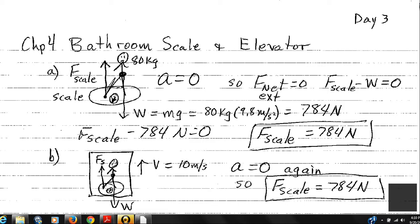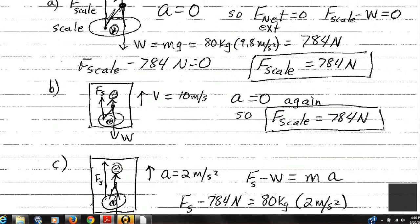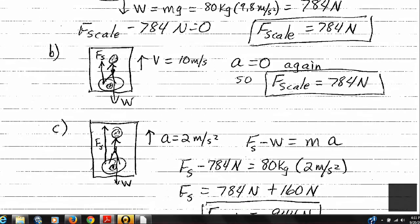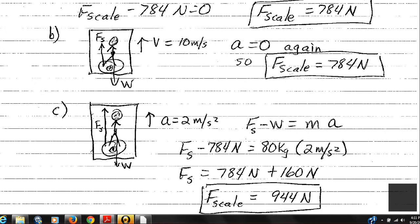Now suppose the elevator is accelerating upward at 2 meters per second squared. F = ma now has a non-zero right side. On the left side: force of the scale minus the weight equals the net external force. On the right side: the mass of the person is 80 kilograms — the elevator and scale are not part of our system. The acceleration is positive upward at 2 m/s². Adding 784 newtons to both sides: 80 times 2 is 160, so the scale reads 944 newtons. This is reasonable — the scale must support the person's weight and also create the upward acceleration.